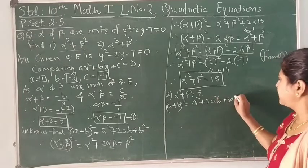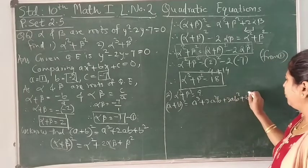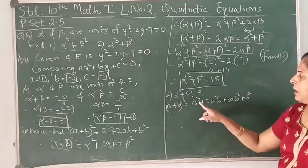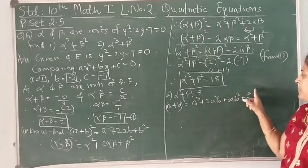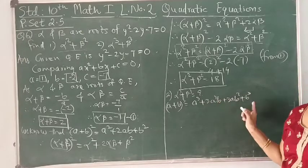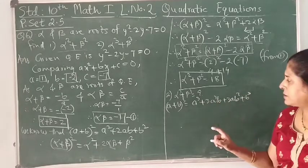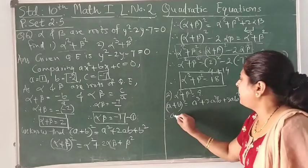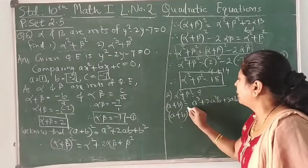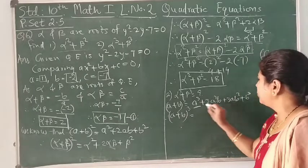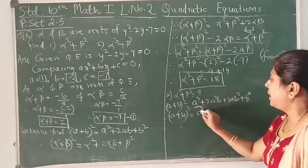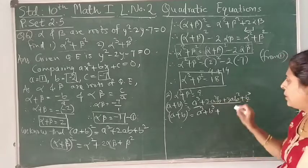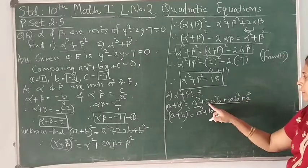By replacing a and b with α and β, we can extract α³ + β³. Rearranging: (a + b)³ = a³ + b³ + 3a²b + 3ab². Taking 3ab common from the last two terms gives (a + b)³ = a³ + b³ + 3ab(a + b).